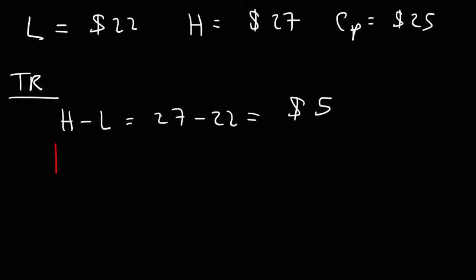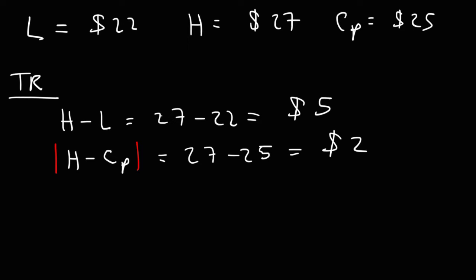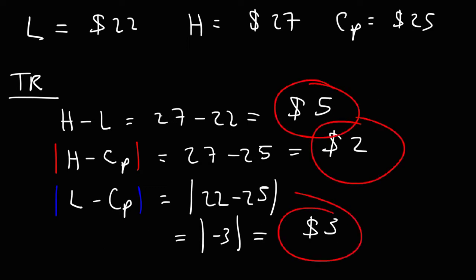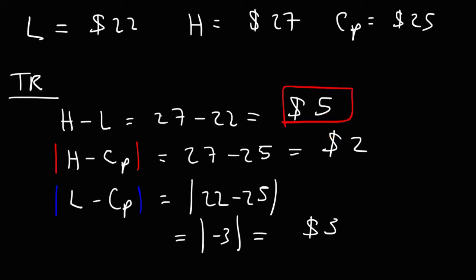Using the second formula, that's the current high minus the previous close: 27 minus 25, which is $2. Using the third formula, it's the current low minus the previous close: 22 minus 25 is negative 3, but the absolute value of negative 3 is positive 3. We then choose the highest of these three values, and that is 5. So the true range for that day will be $5.